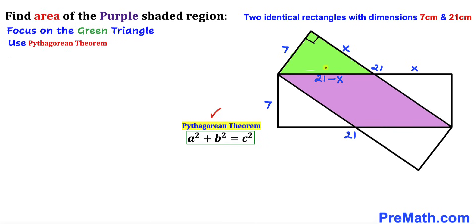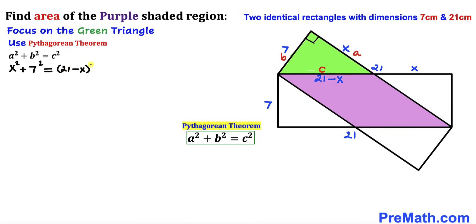Let me call the longest leg side c, this side a, and this side b. Now let's fill in the blanks in this formula. In our case, a squared is x squared, b is 7, so it becomes 7 squared, and c is 21 minus x, giving us (21 minus x) squared.